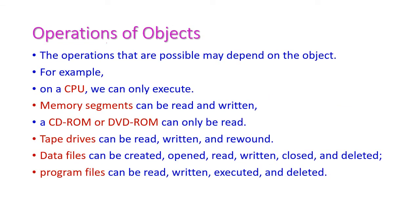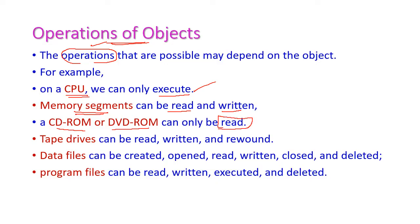Next, let us see the operations of objects. Based on the objects, the operations will be different. For example, a CPU can only execute programs. Memory segments can store data which can be read or written. CD-ROM and DVD-ROM allow only reading the data stored in them. Tape drives can be read, written, and rewound. Data files can be created, opened, read, written, closed, and deleted.